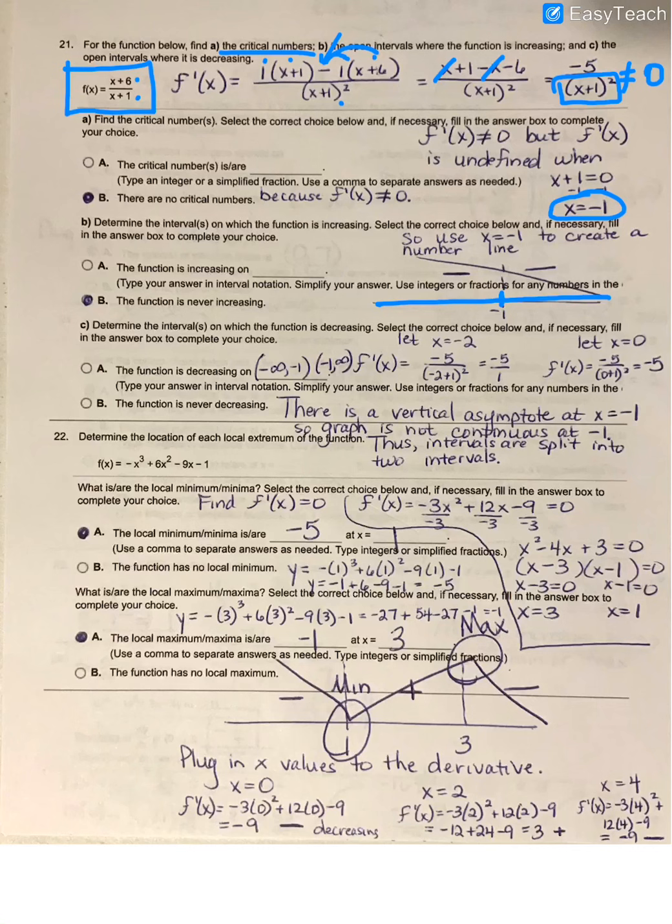I chose to plug in negative 2 to the left hand side. And again, make sure you're plugging it back into your first derivative, so that's what I did here, and I got a negative answer. And then I chose to plug in x equals 0. Again, plugging it into my first derivative here, and I also got a negative number.